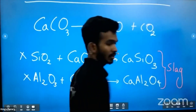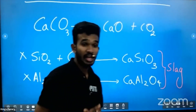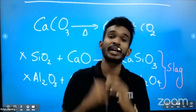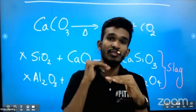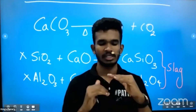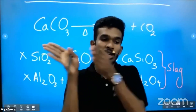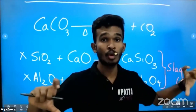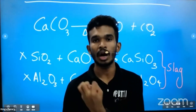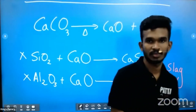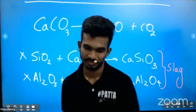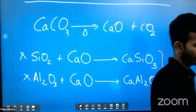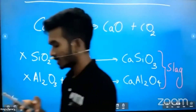This mixture is called slag. Slag floats on top of the iron, so you can easily remove the slag. Underneath, you have pure iron — iron is now extracted. Logically understood!